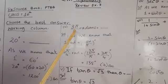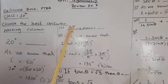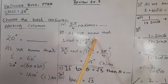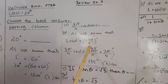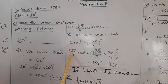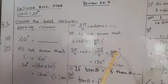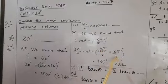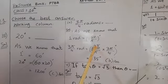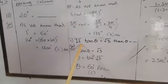Part number 4: 3π/4 radians is equal to — we convert radians to degrees. The formula is: 1 radian equals 180/π degrees. So 3π/4 radians equals 3π/4 multiplied by 180/π. The π cancels, and 180 divided by 4 gives 45, then 45 multiplied by 3 equals 135 degrees. The right option is B: 135 degrees.